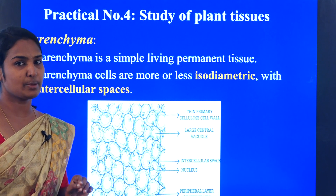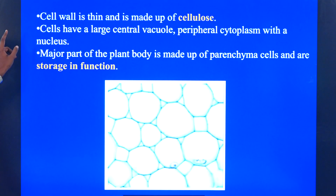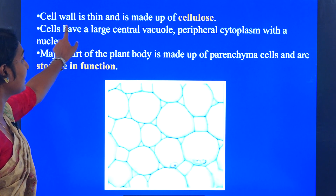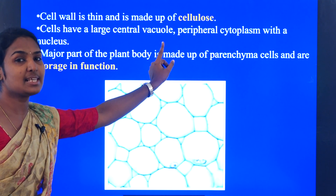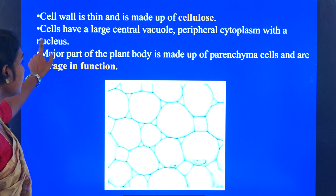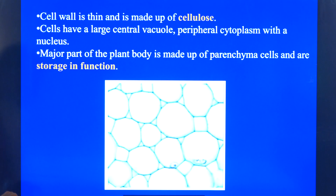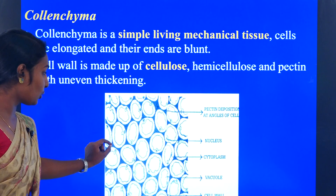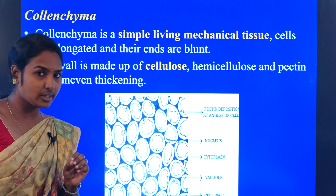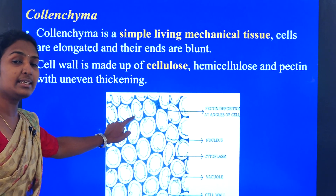Regarding parenchyma, if you see the cell wall of a parenchyma cell, it is mainly made up of cellulose. The cell wall is made up of cellulose, and cells have a large central vacuole with peripheral cytoplasm and a nucleus. So if you see a parenchyma cell, at the center we will be seeing one cavity — that cavity we call it as vacuole. There will be a nucleus at the periphery.